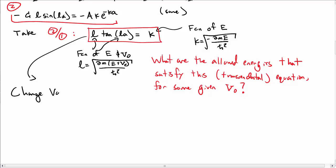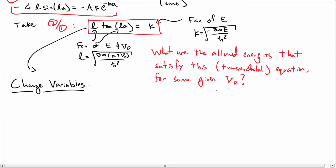We're going to change variables. Instead of working with L and K, let's put everything in terms of Z, which is defined as L times a, and Z naught, which is defined as a over h bar times the square root of 2m V naught.